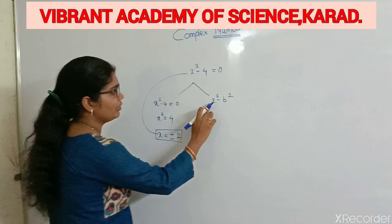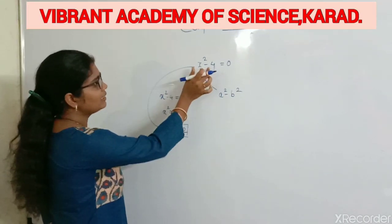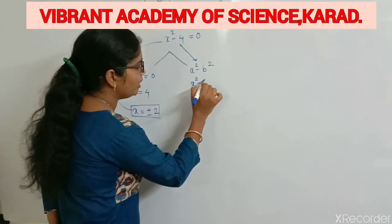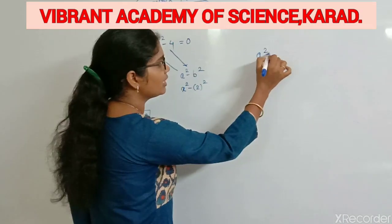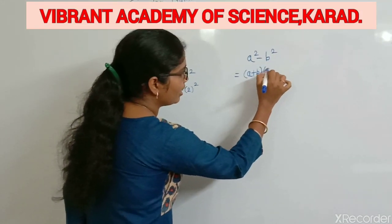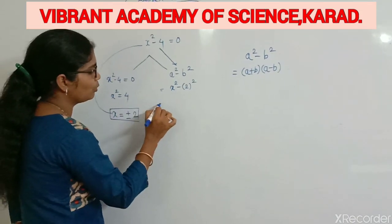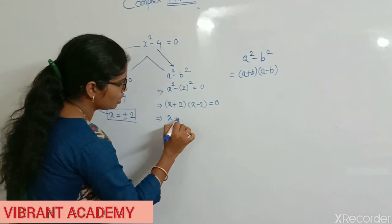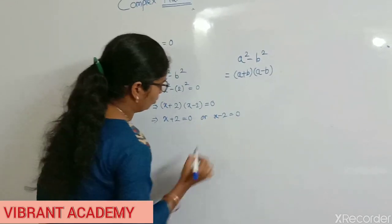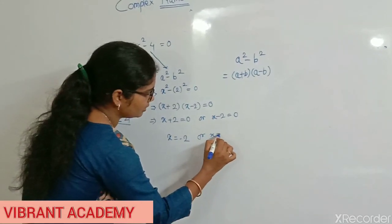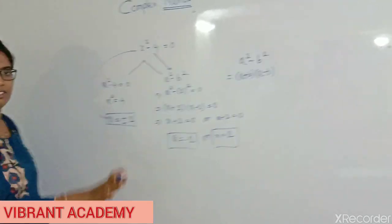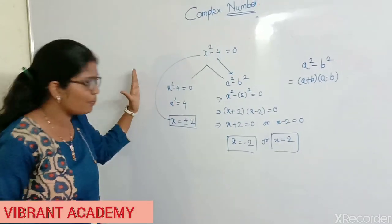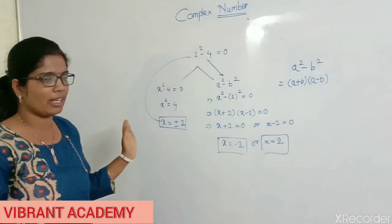Here is one more method: using the form a squared minus b squared. This is the standard form. So x squared minus 2 squared — using the identity a²-b² equals (a+b)(a-b) — gives us (x+2)(x-2) equals 0. Simply, x plus 2 equals 0 and x minus 2 equals 0, giving x equals minus 2 and x equals 2. This is the same result. Substituting in LHS and RHS is satisfied.